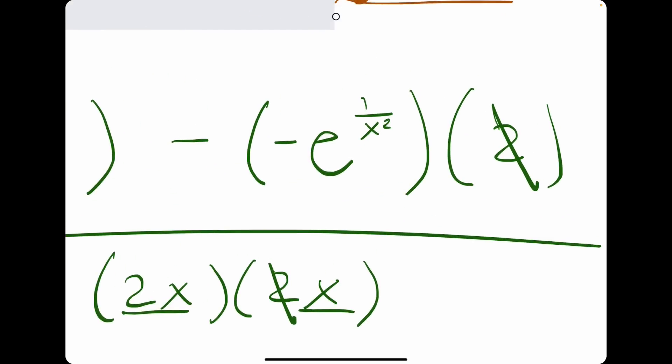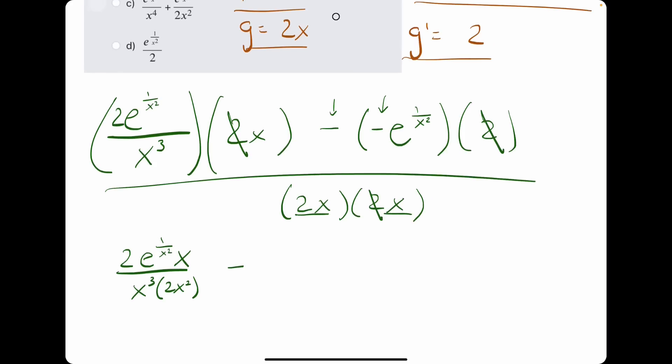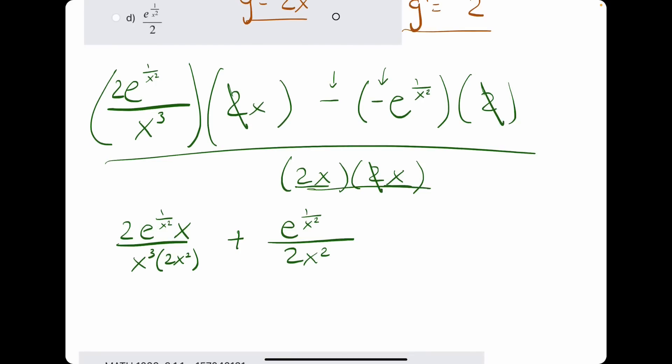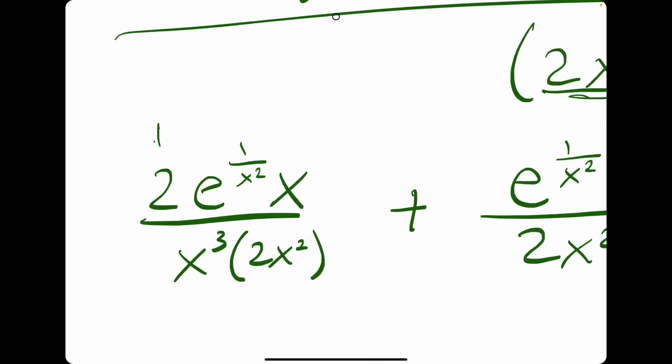So, now, we have minus a negative e term. So, we'll do plus that same e term. And then divided by 2x squared, which was this denominator here. So, hopefully, let's see if we can cancel anything else. It looks like this 2 and this 2 can cancel. So, those are gone.